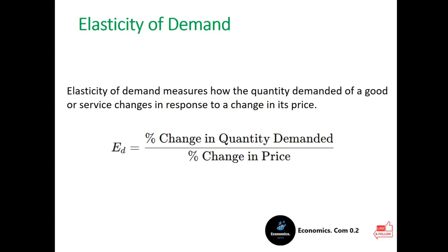Let's look at the formula. Elasticity of demand is calculated by dividing the percentage change in quantity demanded by the percentage change in price. If the price of a product increases and the quantity demanded decreases significantly, the demand is said to be elastic. On the other hand, if a price change has little to no effect on quantity demanded, the demand is considered inelastic. This concept is very important for students, business owners, and policymakers, as it helps predict consumer behavior when prices fluctuate, enabling better pricing strategies and market decisions.